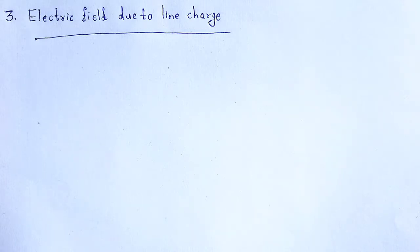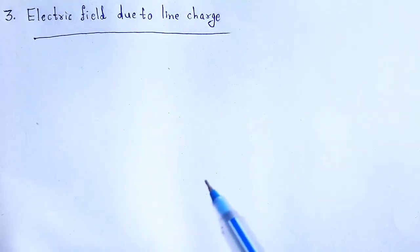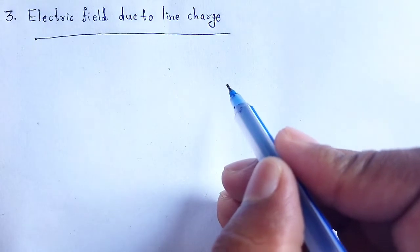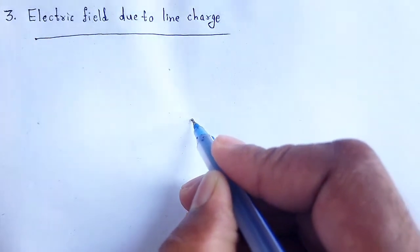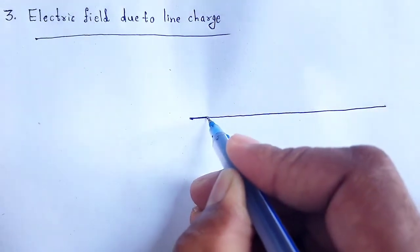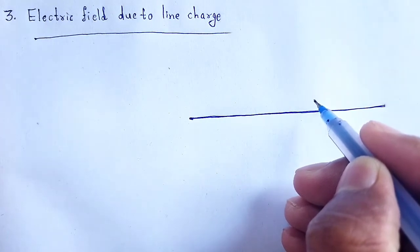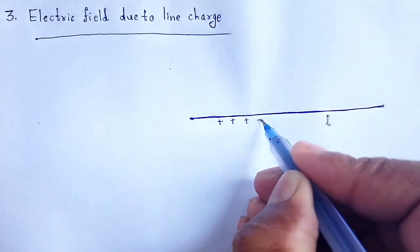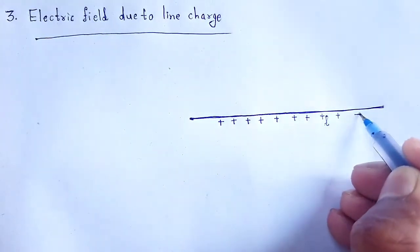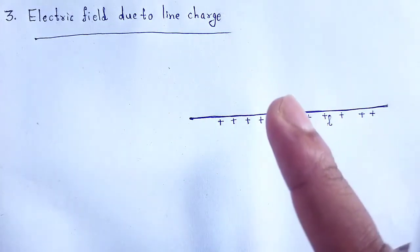In this video we are going to discuss one of the applications of Gauss's law, that is the electric field due to a line charge. Here, charge Q is uniformly distributed over a thin long straight wire of length l, and charge Q is distributed lengthwise along that long thin straight wire.